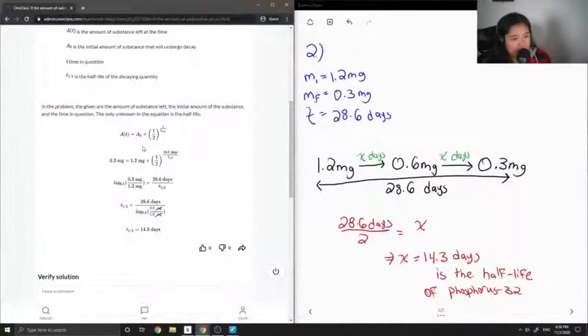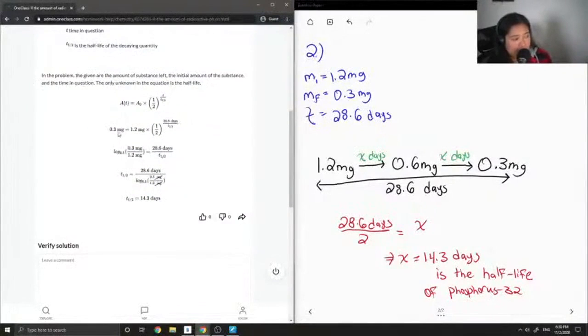So you see that all they do is plug in all the values that they're given. So 0.3 mg is what they're left with, the 1.2 mg is how much we started with, the t is 28.6 days, and then we're trying to solve for half-life.